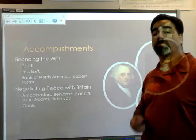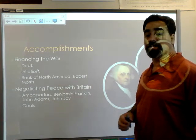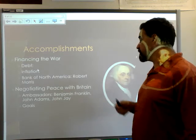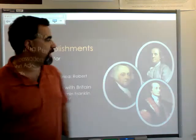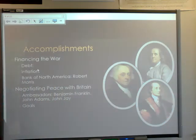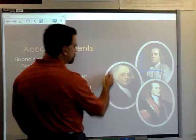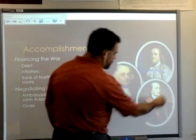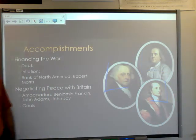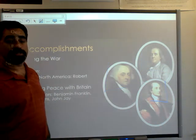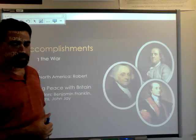Probably the most important and most pressing accomplishment to take place under the Articles of Confederation is the negotiation of peace with Britain. This was done by Benjamin Franklin, John Adams, and John Jay — this handsome devil here. Their goal was to go to Paris and negotiate independence with the British.